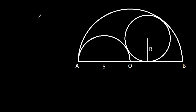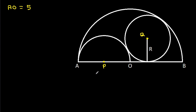We have AO is 5. Suppose the center of the smaller semicircle is P, and suppose the center of the circle is Q. Then AP will be equal to PO, that will be 5 over 2. So AP is 5 over 2 and PO is 5 over 2.